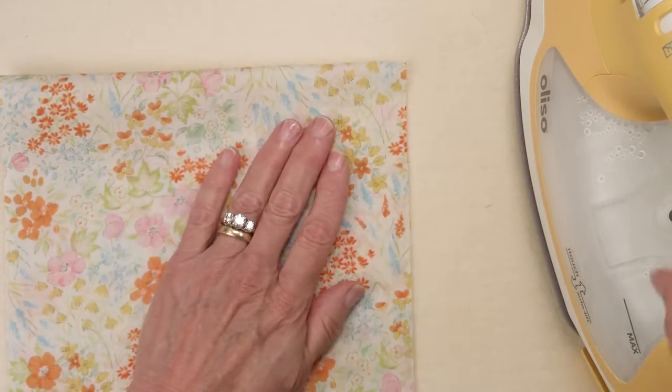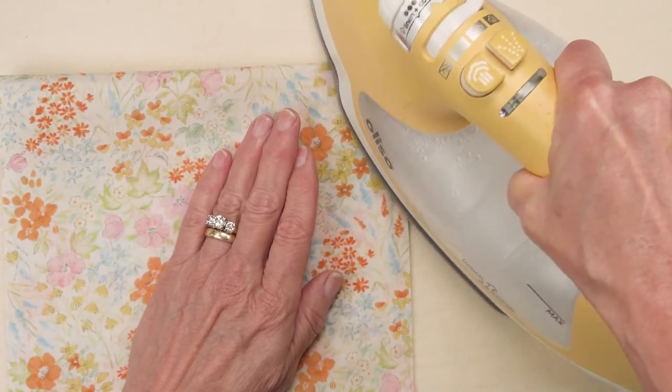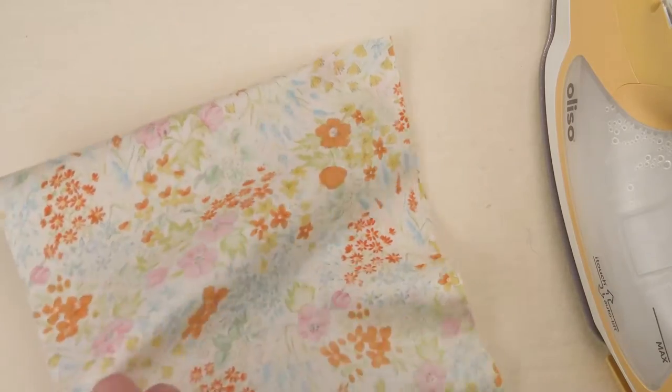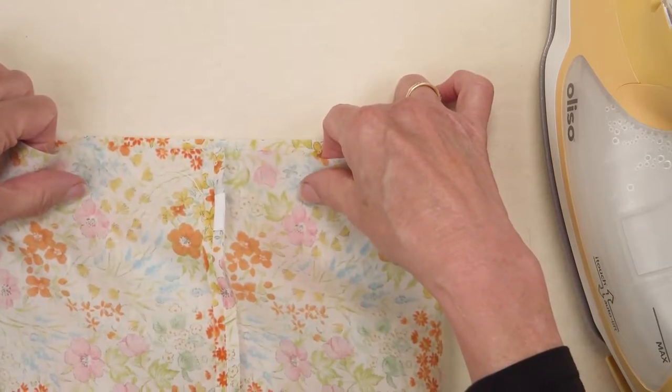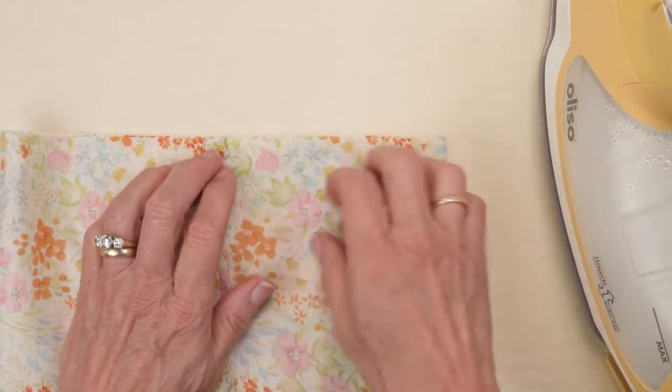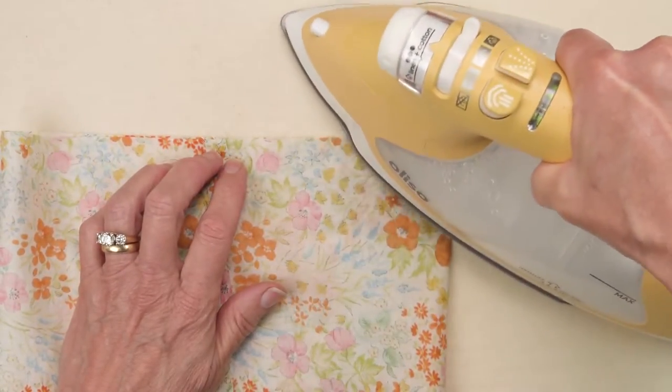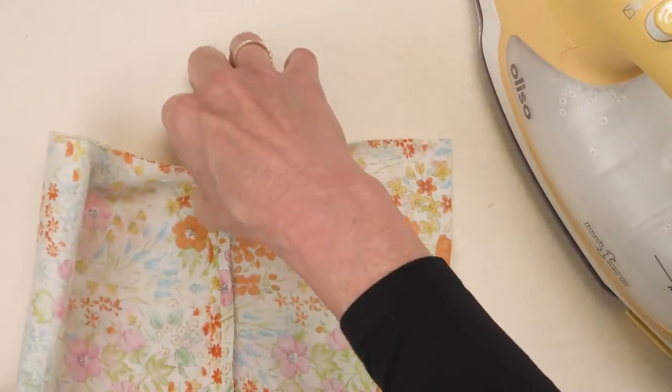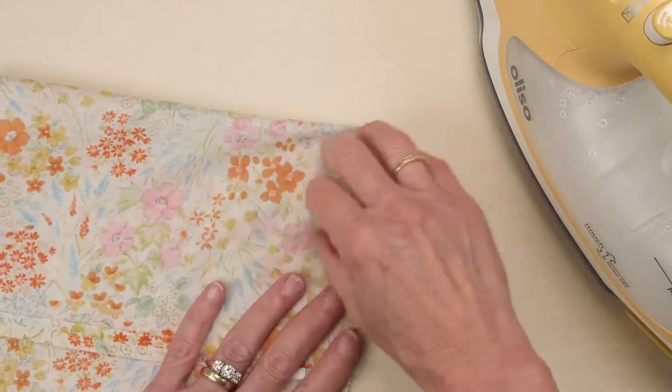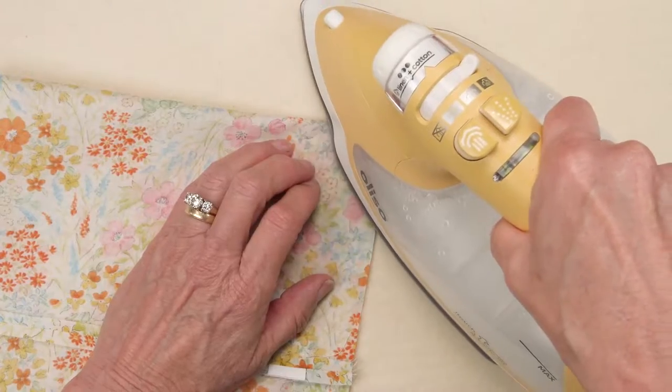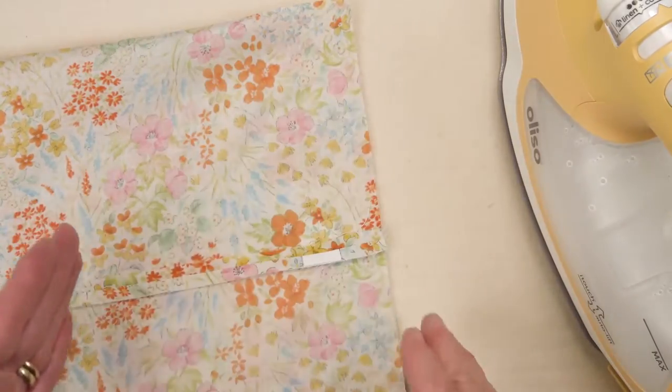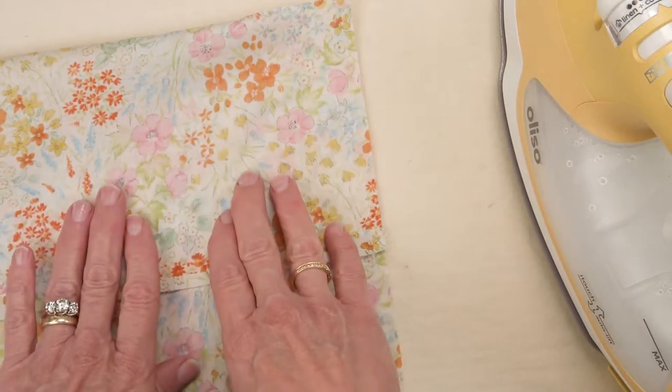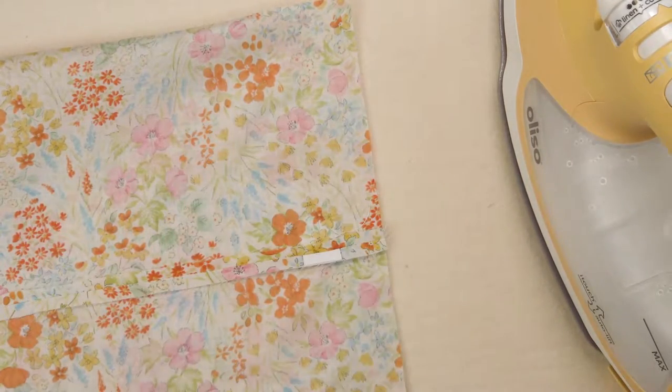On the bottom give that a little press and then open the tube and match those centers and press a little crease here and here. And do that find the north, south, east and west points on both the inside and outside of the bag.